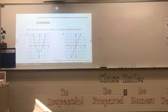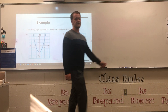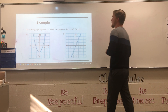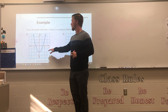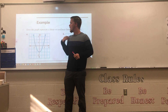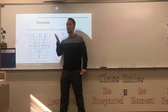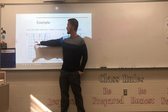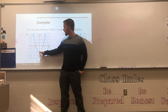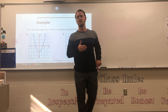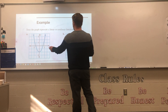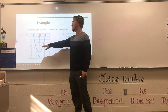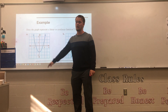Let's look at some examples. The question asks: does the graph represent a linear or nonlinear function? In part A we have a parabola. Right away you can tell it's a nonlinear function because it's not a straight line — the rate of change is not constant since it goes down, bottoms out, then goes back up. To explain, you say it is not a straight line or does not have a constant rate of change.